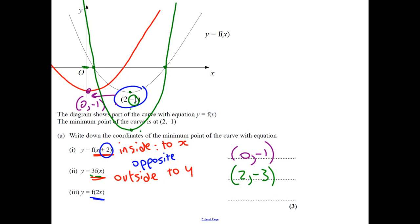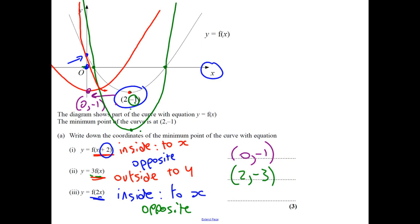Next one, f(2x). If we did it on the diagram, it's inside, so it's to x. It's going to be the opposite — it's a stretch because we're multiplying, and the opposite of times by 2 is divided by 2. Here are your x-values, so the thing at 0 is going to stay the same — those are the fixed points. Everything else is going to get stretched inwards, so this is going to go from (2, −1) to (1, −1). Everything halves. If you just like the algebra, just halve your x-value — giving (1, −1).